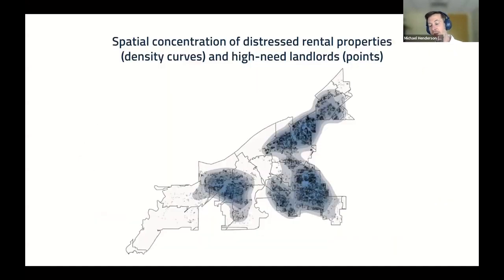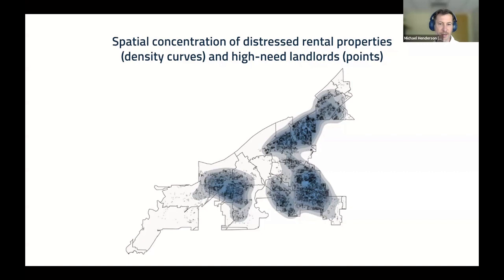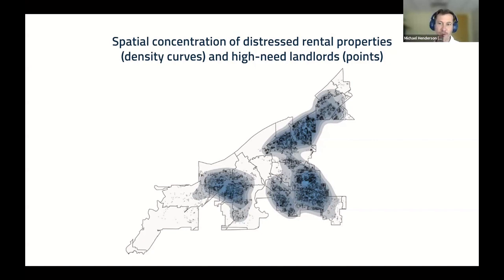We identified three different types of landlords. One in particular is what we would call mom-and-pop landlords — they own pretty much one property, operating as themselves as people rather than a corporate entity. Their properties are overwhelmingly in bad condition with high rates of tax delinquency and other signs of distress. A final map shows density curves of high distress areas with the locations of these high-need landlords. All this research came together and continues to inform the rollout and implementation of Cleveland's lead-safe strategy.